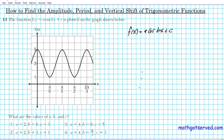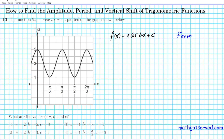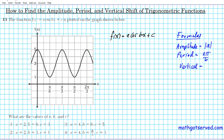Let's start with some formulas we need to know in order to solve this problem. Number one, the amplitude — the distance from the center to the max — is given by the absolute value of a. The period is given by the formula 2π over b. And the vertical shift is simply the c value.